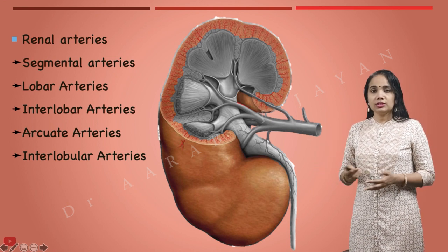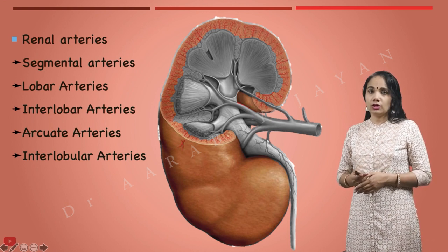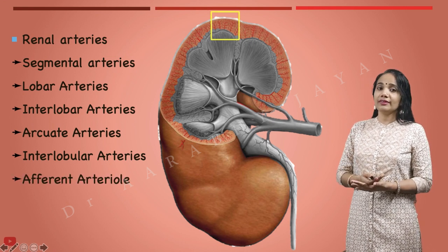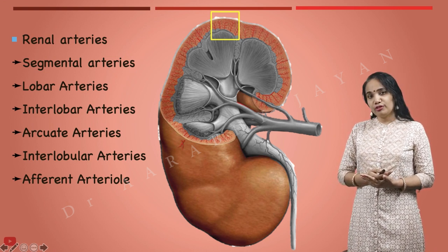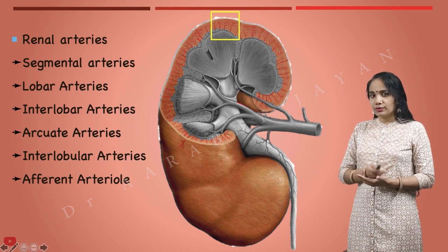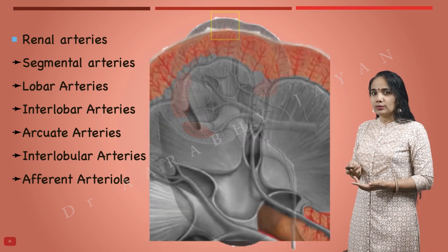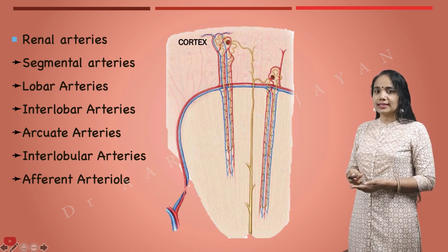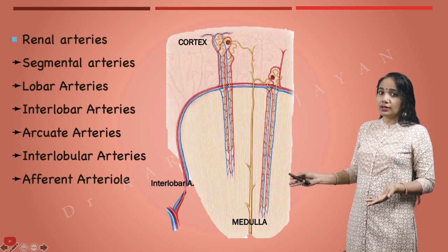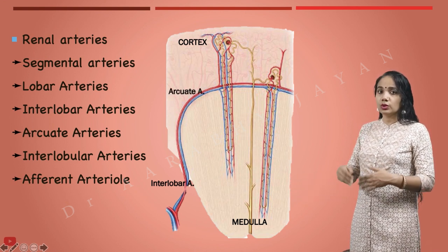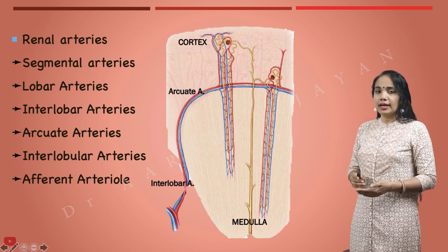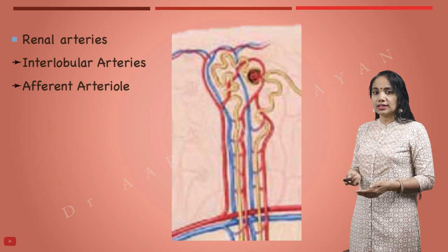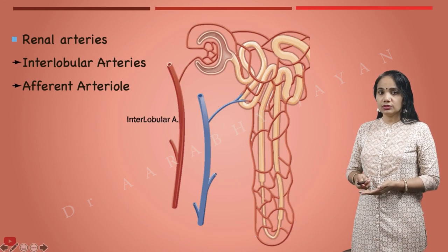The arcuate arteries give off radial branches into the cortex — these are the interlobular arteries, also called cortical radial arteries. In a schematic view, you can see the cortex and medulla clearly: interlobar arteries run between the medulla, dividing into arcuate arteries along the base of the medulla, which then give off the interlobular (cortical radial) arteries. Zooming in further, the cortical radial arteries give off the afferent arteriole.